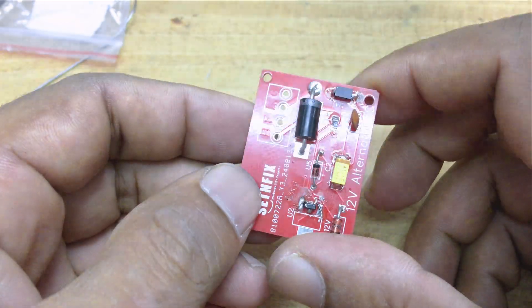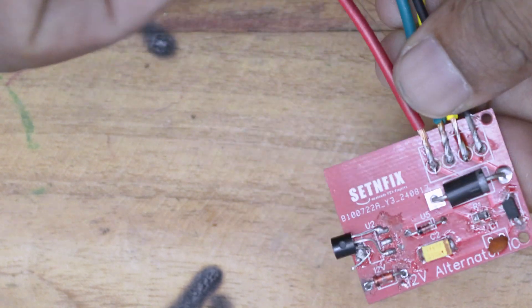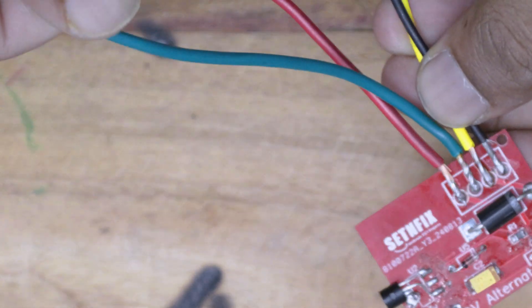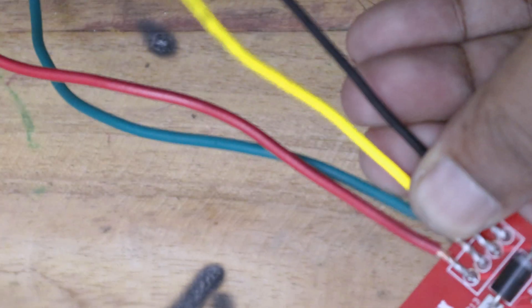Once all the components are soldered well, you can connect wires. This red wire is for battery, the green wire is for field coil, the yellow wire is to battery indicator, and the black wire is to ground.